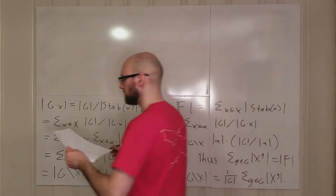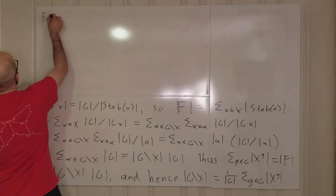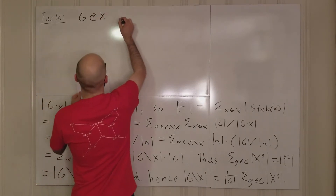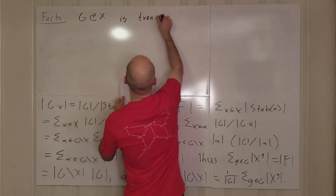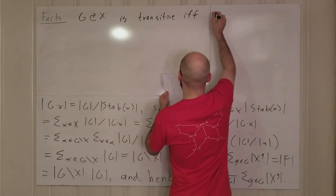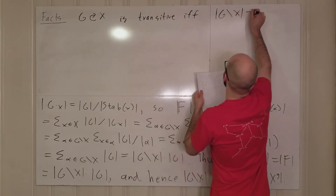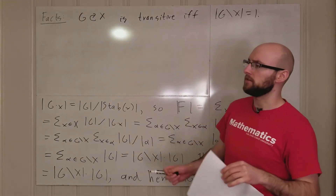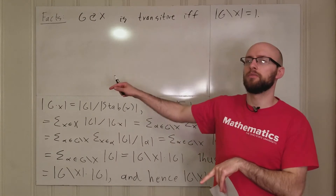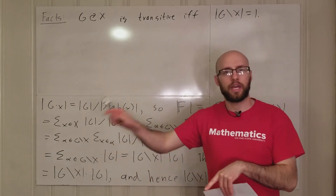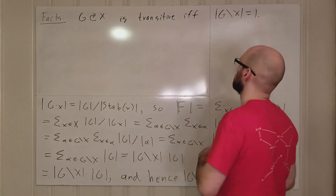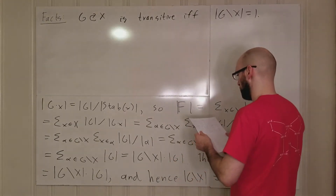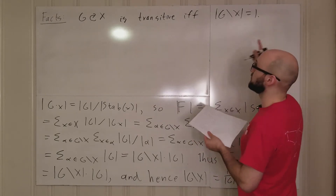Let's end with some facts. G acting on X is transitive if and only if the number of orbits is one. That's obvious because being transitive means you can get from any point to any other by the group action, so the orbit is all of X — there's only one orbit. Conversely, if there's only one orbit, you can get from anywhere to anywhere else.